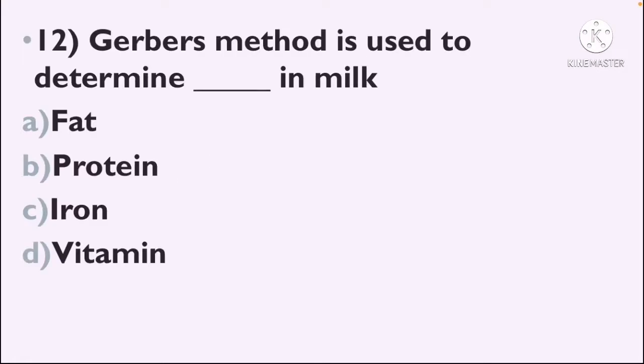Next question: Jarba's method is used to determine what in milk — Option A: Fat, Option B: Protein, Option C: Iron, Option D: Vitamin.